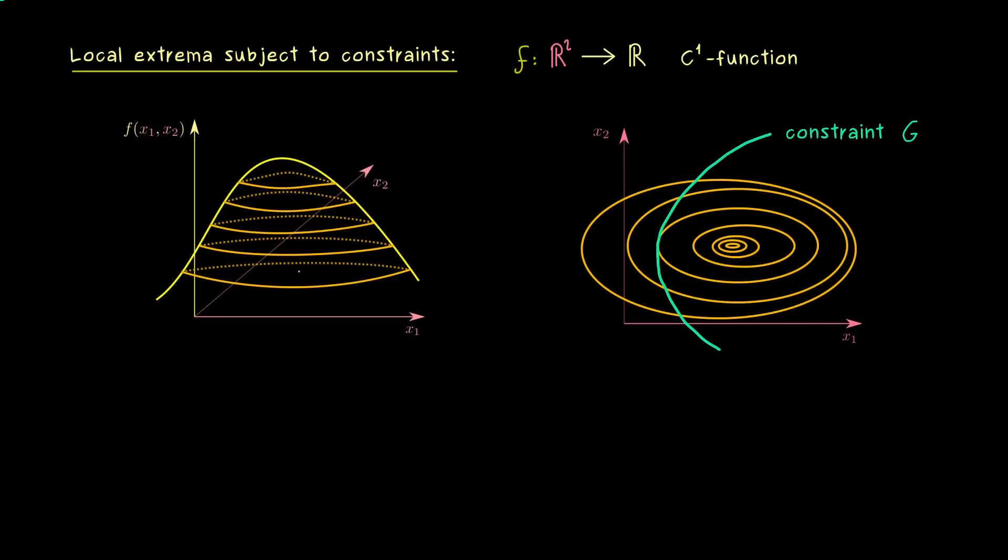In particular, we immediately see that the old original local extremum of f is not included anymore. Indeed, if we look at the picture on the left-hand side, we see that the constraint G is a path on this mountain that will not reach the peak. However, still on this path, we will find a maximal altitude.